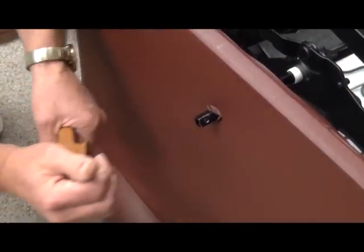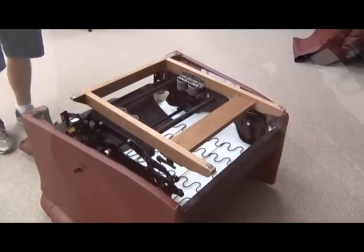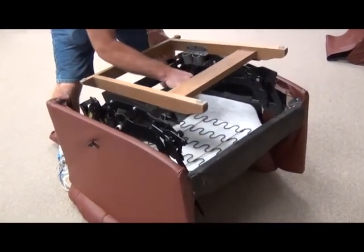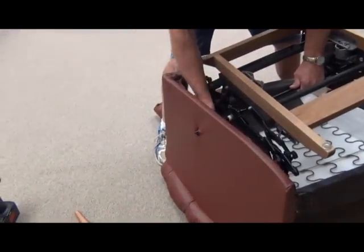Once this is done, simply pull the handle off of the handle mounting tube. Being careful not to tear the fabric on the side of the recliner, simply lift the mechanism out of the chair.